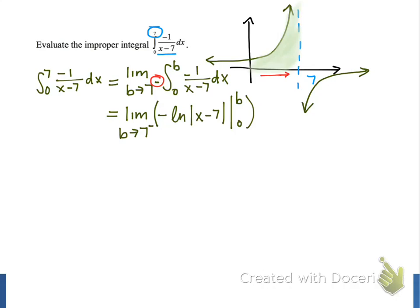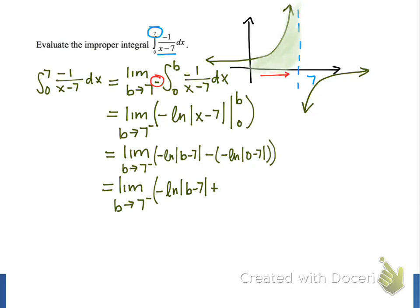When we evaluate this antiderivative at x equals b, we get negative natural log of the absolute value of b minus 7, and then we subtract negative natural log of the absolute value of 0 minus 7. We can simplify this limit as b approaches 7 from the left of negative natural log of b minus 7 plus natural log of 7.